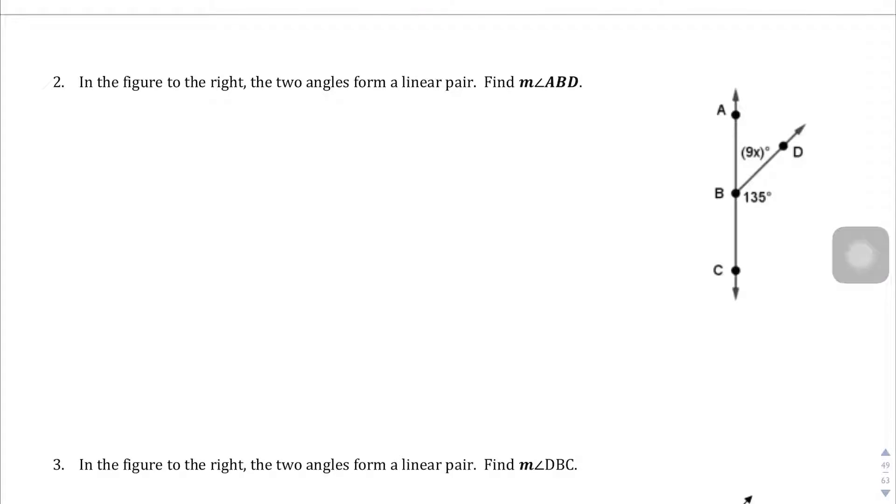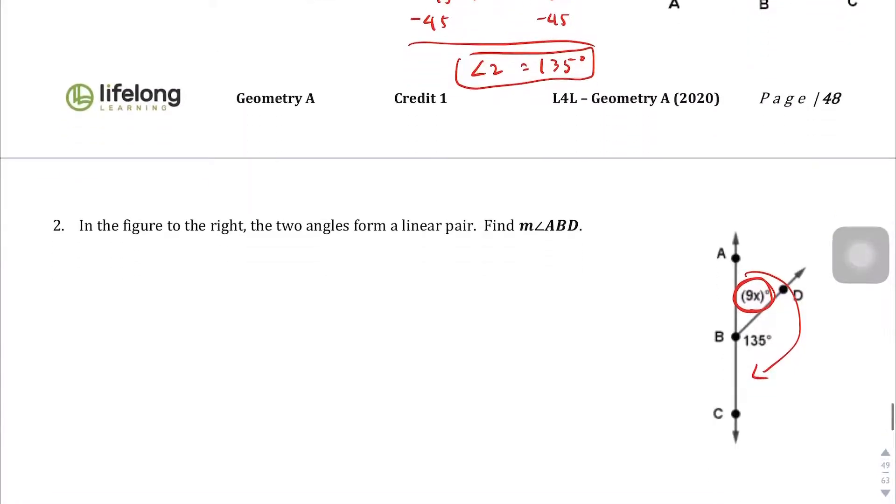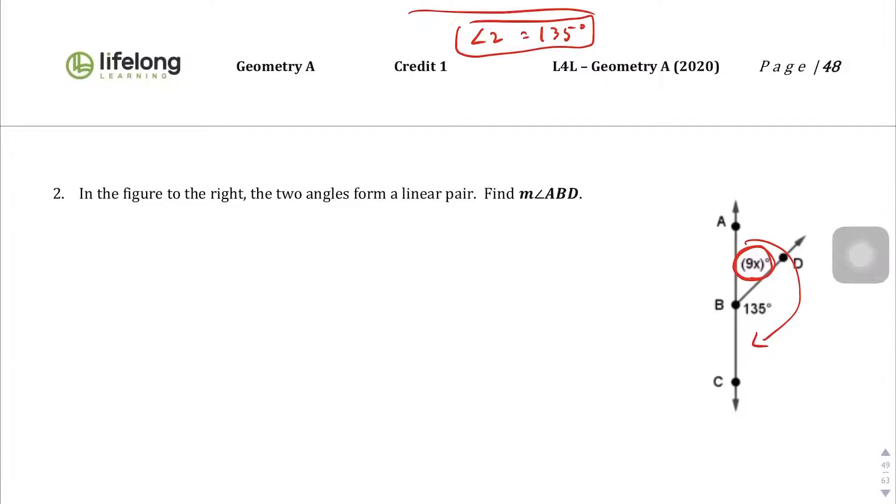Let's take a look at question number 2. In the figure to the right, the two angles form a linear pair again. So find ABD. We want to know what this angle is, we can't just say 9x. We've got to know what the angle is. Well, this is very similar to the previous problem. So we know that 9x is going to be equal to 45 degrees.